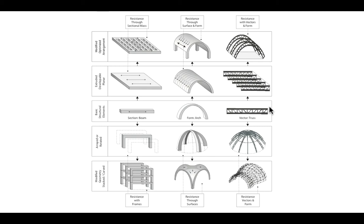You may be sensing a theme: we have tools — section active, form active, vector active, one-way, two-way — and the more we combine and hybridize them, the more efficient the structure is likely to be, though also more complicated. Complexity and efficiency go hand in hand in long span structures. The constant trade-off is whether we want maximum structural efficiency and minimum material, or the structure that is cheapest and simplest to build on site.